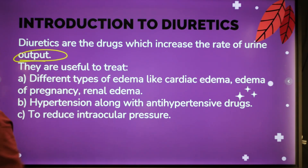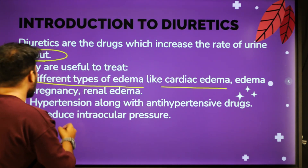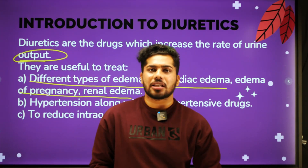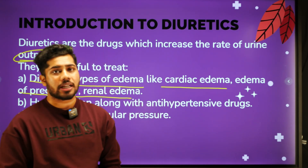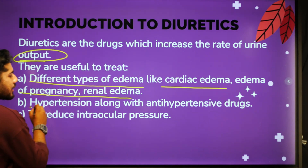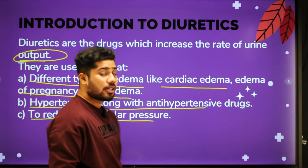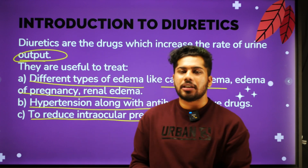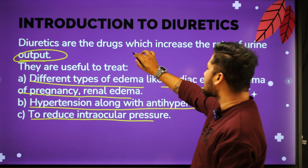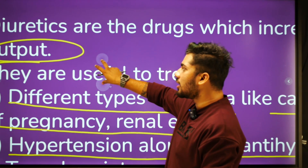Diuretics are useful to treat different types of edema — like cardiac edema, edema of pregnancy, and renal edema — and hypertension along with antihypertensive drugs, and to reduce intraocular pressure. Diuretics are drugs which increase the rate of urine output. This is a very important point.